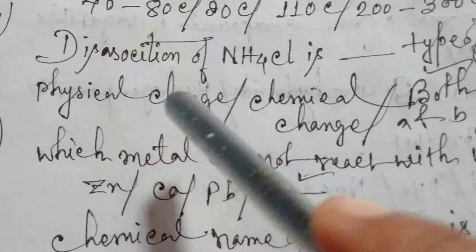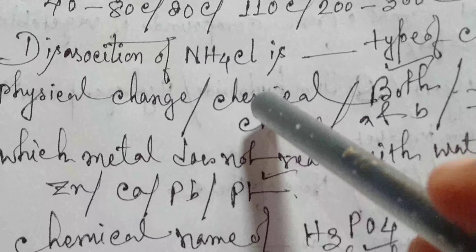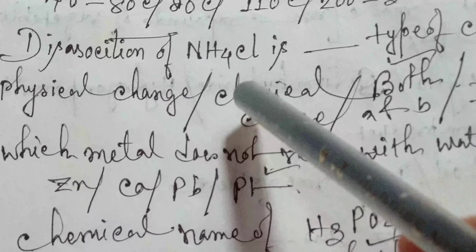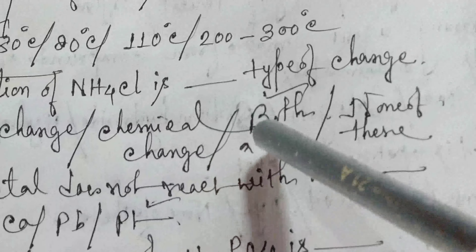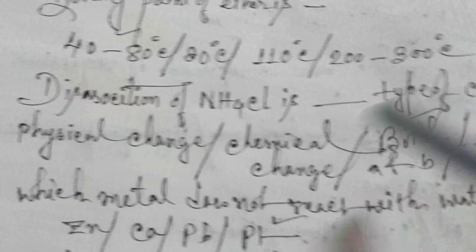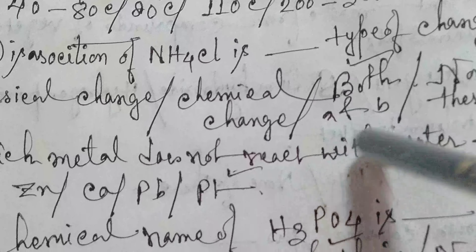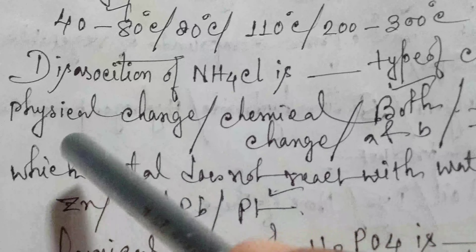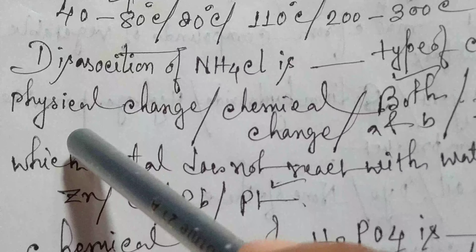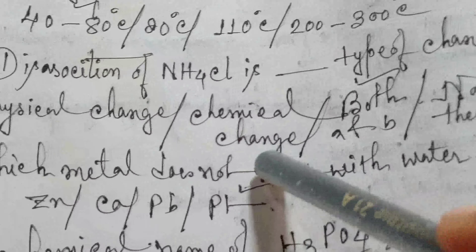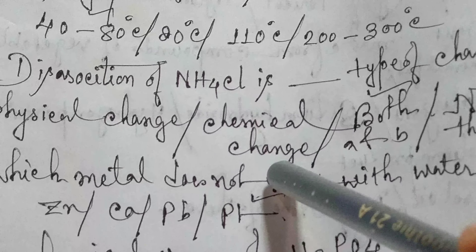Next: the dissociation of NH4Cl — that is ammonium chloride — is what type of change? Options are physical change, chemical change, or both A and B — meaning physical change as well as chemical change. The answer is both A and B.